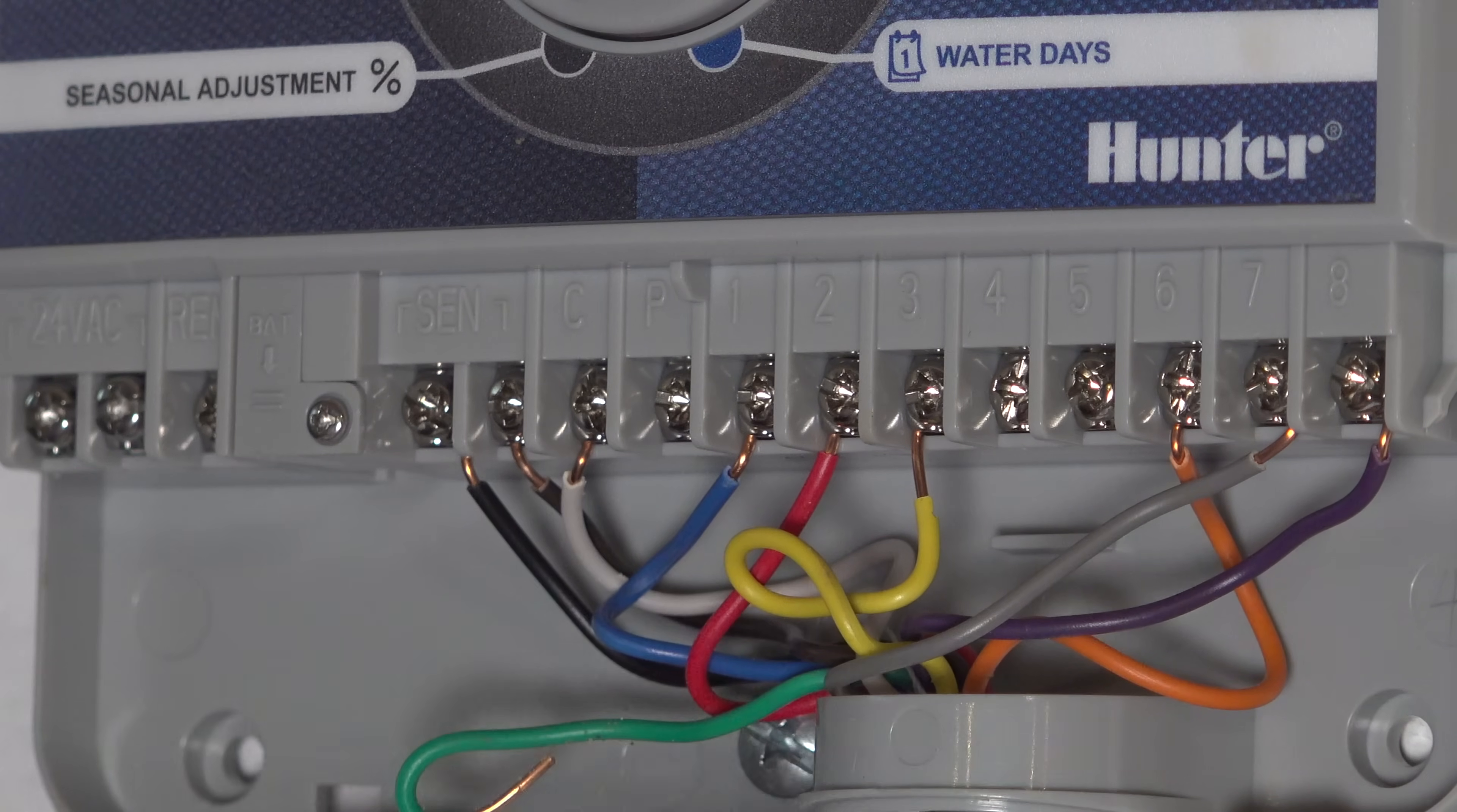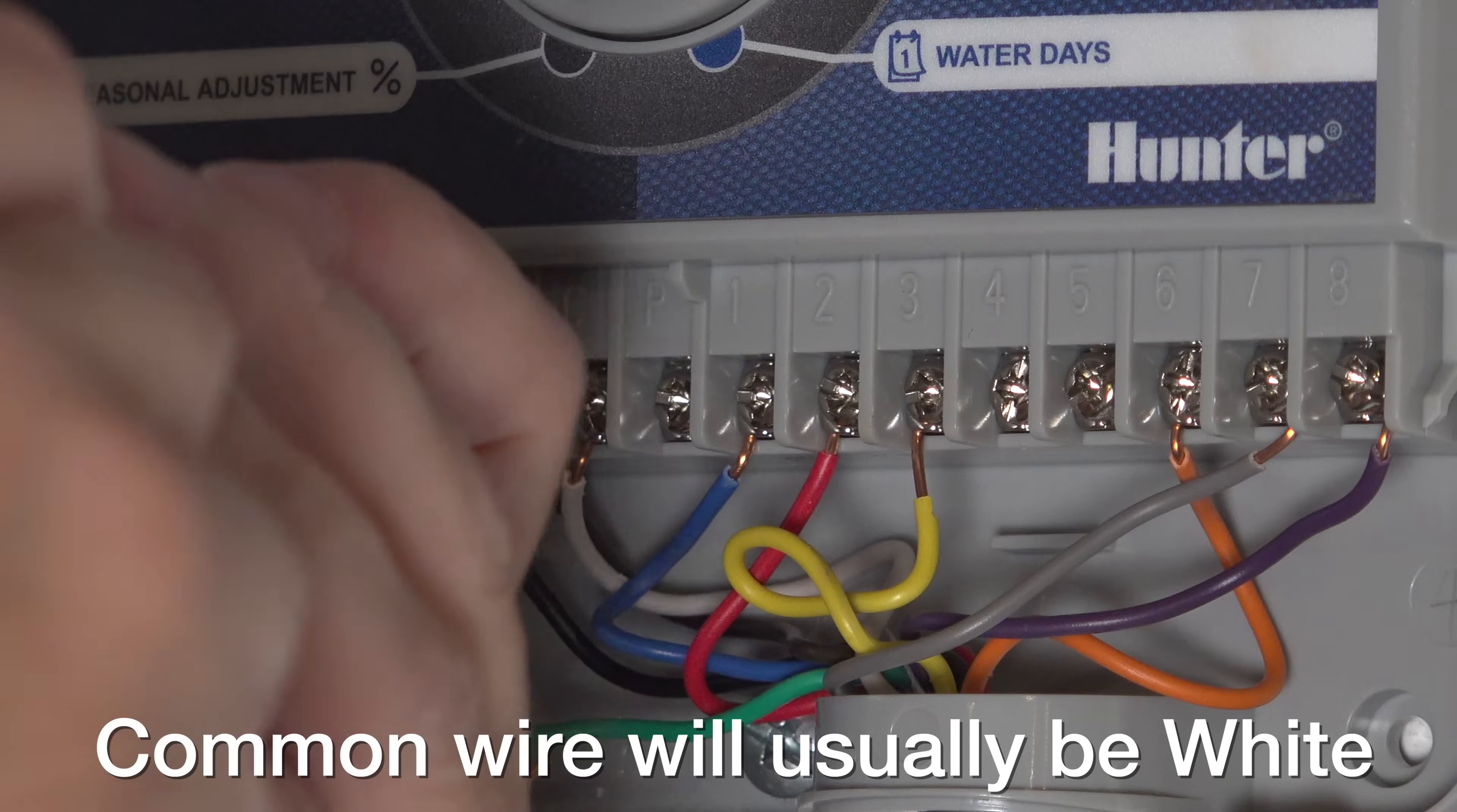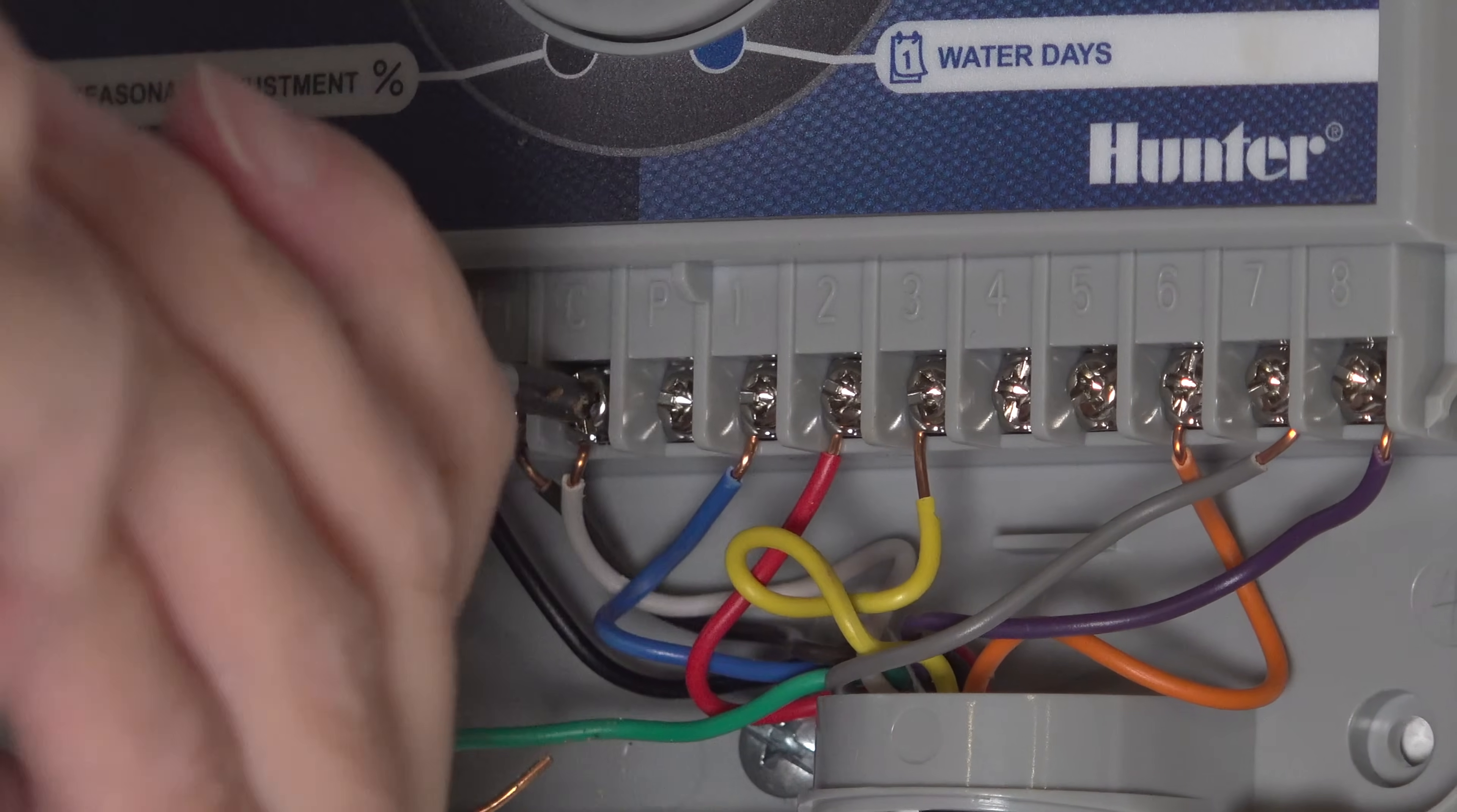Now we're left with wires that control each one of your sprinkler zones along with a common wire and a sensor wire. The sensor wire is if you've got a rain sensor on your system. But the good news is you don't really need to know what any of these individual wires do.